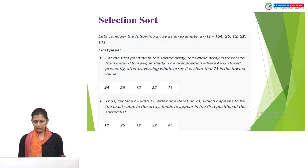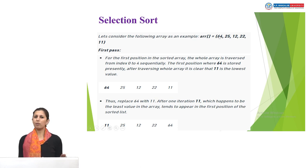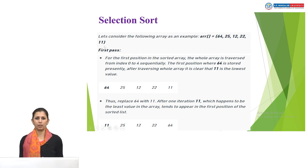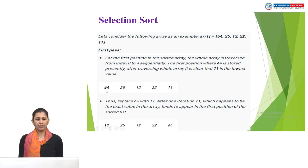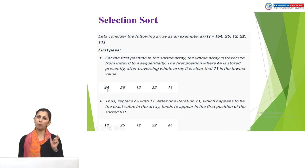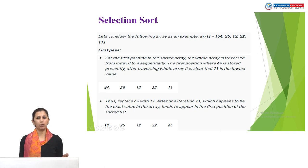Let's take an example. We have an array with five elements: 64, 25, 12, 22, and 11 — this is our unsorted array. To sort it, I will take the first value, 64, and presume it as my minimum value.